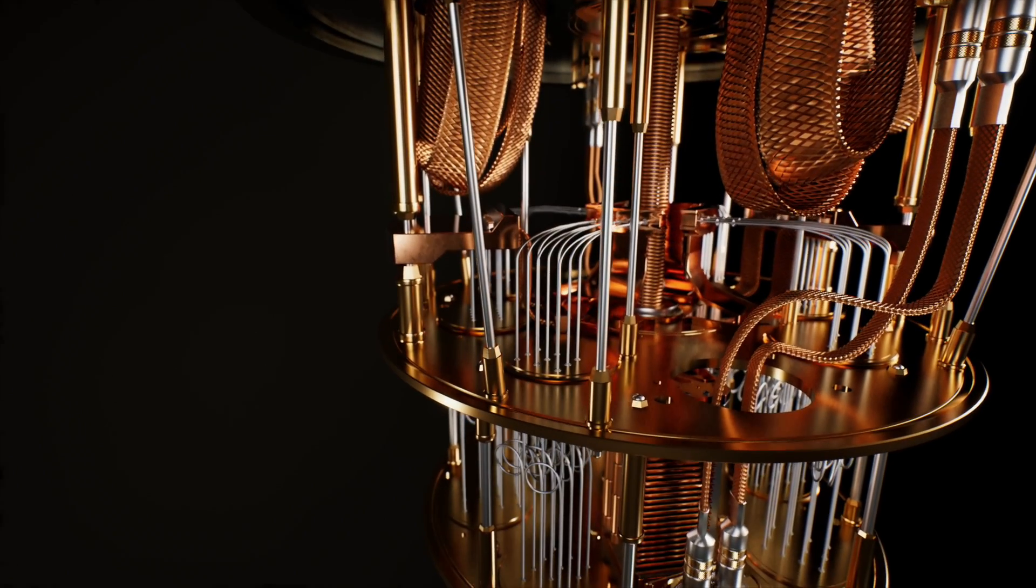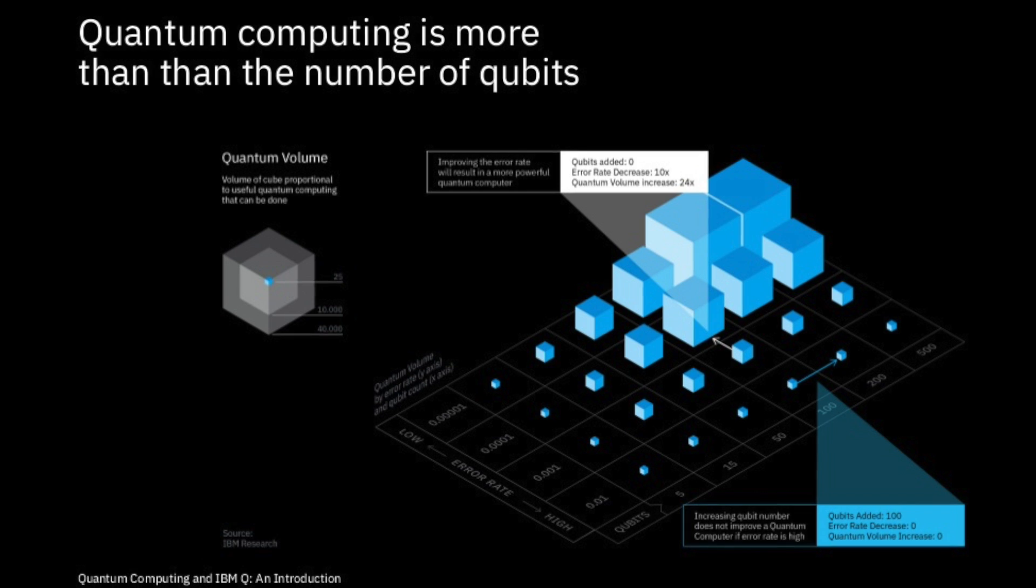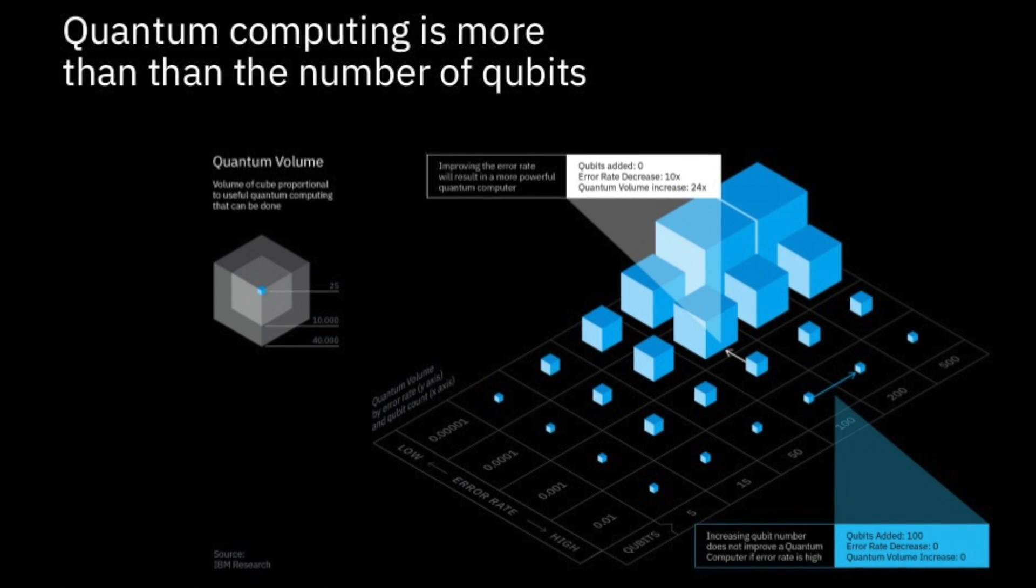The problem holding back all quantum computers is that they make lots of small errors, and as they scale up, the errors become overwhelming.